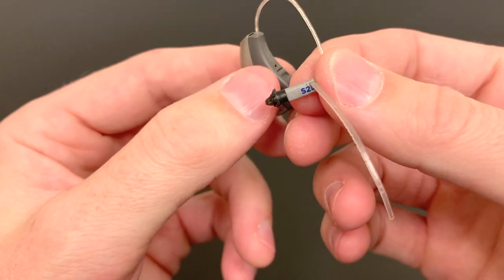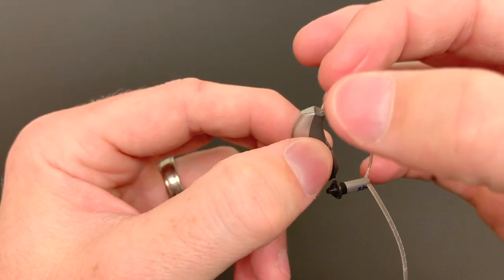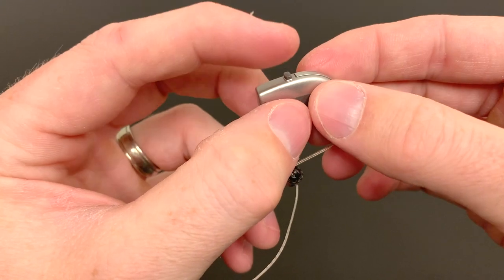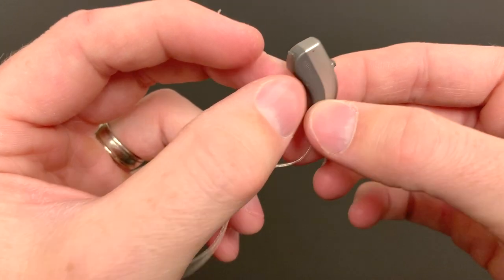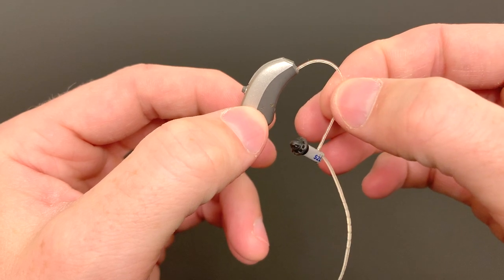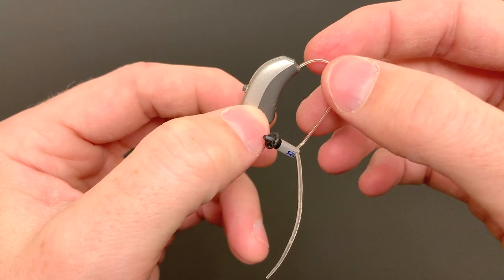The gray box here on the end is called the receiver with the wire that goes back to the hearing aid body itself. On the back, you have your program button and on the bottom is your battery door. That is the anatomy of a receiver in the ear or receiver in the canal hearing aid.